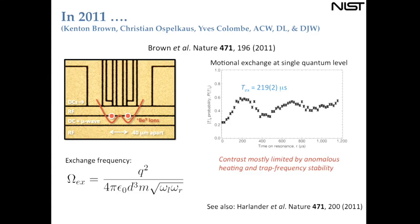Let me describe our NIST experiment in more detail. Kenton's arrangement had two ions in the trap with multiple DC electrodes to generate double-well potentials with a range of spacings. In this particular arrangement the ions were 40 microns apart. The rate of energy exchange is given by an expression critically dependent on D, the spacing between the ions. For Kenton's setup, the period of oscillation is around 200 microseconds.